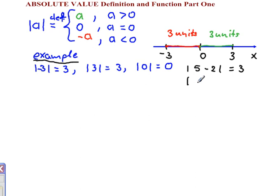Let's say between negative 5 and negative 2, the distance also is 3 units. So the outcome is always positive or 0.